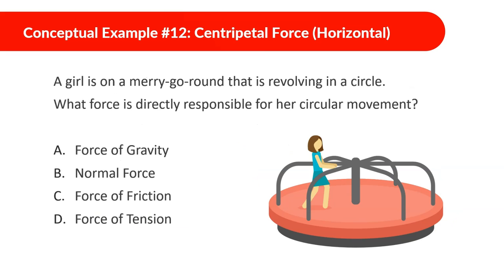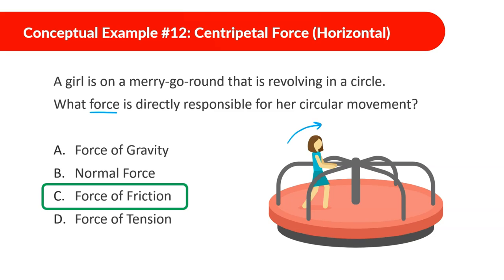A girl is on a merry-go-round that is revolving in a circle. What force is directly responsible for her circular movement? The answer is friction. Without friction, if she starts to slip there's nothing to keep her on, and she would fly off. Friction is what allows her to move in the circle in this case.